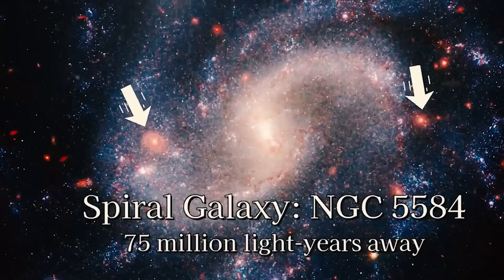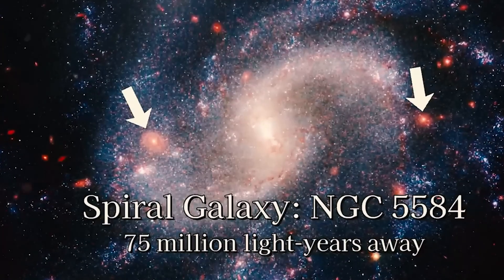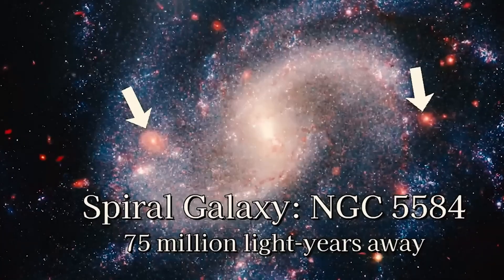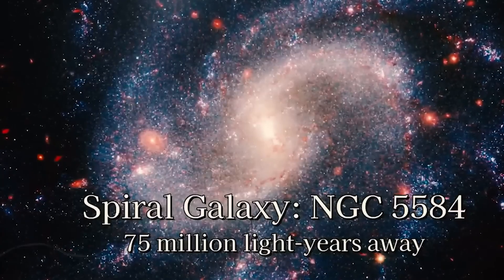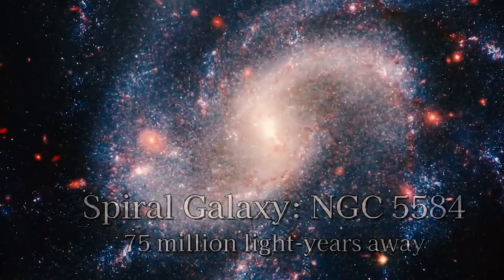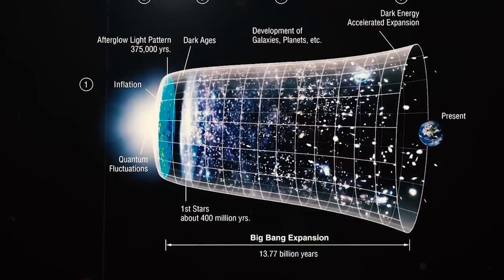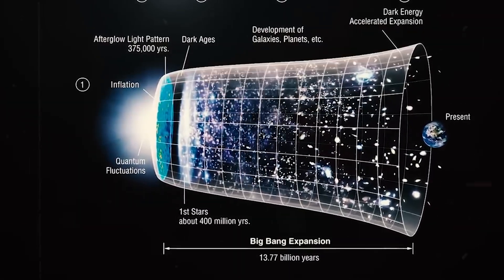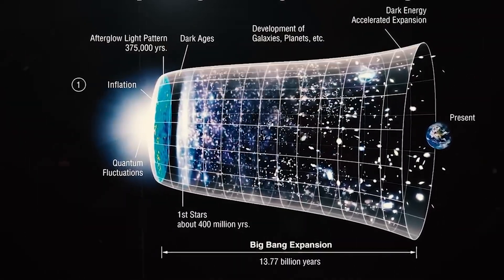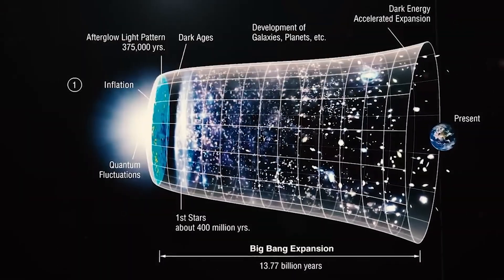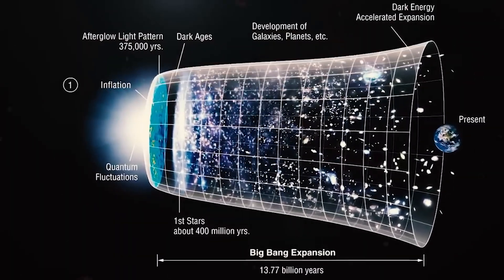The data comes from pulsating stars embedded in a spiral galaxy known as NGC 5584, located about 75 million light-years from Earth. By tracking the rhythmic brightening and dimming of these stars, astronomers can precisely measure the galaxy's motion. And what those measurements suggest is startling. The universe appears to be expanding faster than our leading cosmological theories predict.